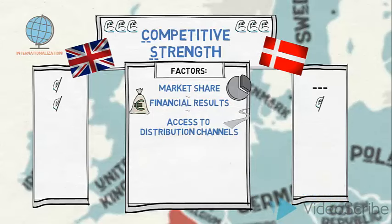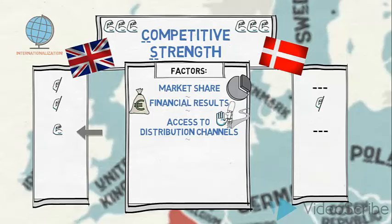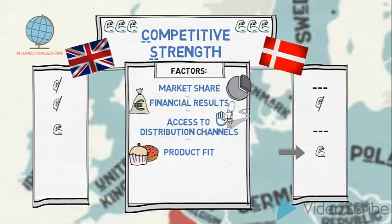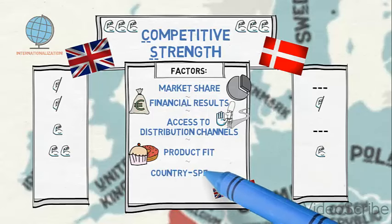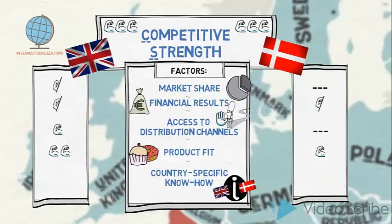Access to distribution channels is very important to gain a foothold in a new market. If all available channels are heavily guarded by strong competitor-to-network relationships, this will negatively influence French Cakes' competitive strength. In the UK, they have managed to gain access to a distribution channel through an agent with a promising network. In Denmark they have no access, as sales have been through sporadic direct export only. French Cakes' cakes and desserts fit both markets well, and the UK slightly better. Country-specific know-how is also important; they have some but still very limited know-how in the UK, while Denmark remains unknown territory.